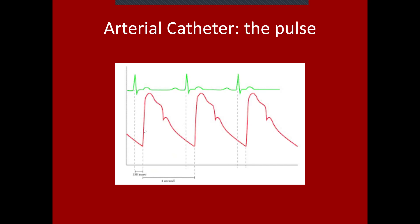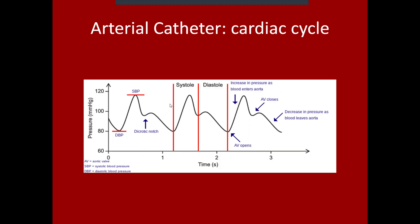Shortly after the QRS complex, you see a pulsatile arterial waveform. The bottom and top of this arterial waveform show us the diastolic and systolic blood pressure. This waveform can also be broken into the periods of systole and diastole, where blood is being ejected from and filling the ventricles respectively.